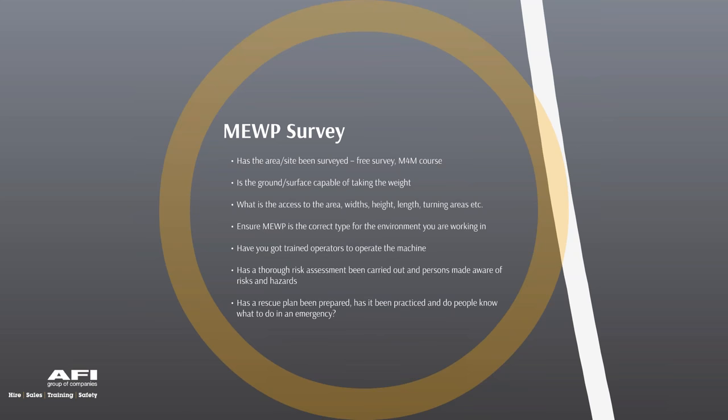A survey must be conducted by a competent person prior to use of the MEWP, to assess hazards associated with that location and determine the most suitable machine and method of use. Key considerations include: whether the ground surface can take the weight, access width, height and length, turning ability, correct machine type, fuel type (diesel versus electric for indoor use), whether operators are trained and familiarized, whether a rescue plan exists, and whether the risk assessment covers all hazards.